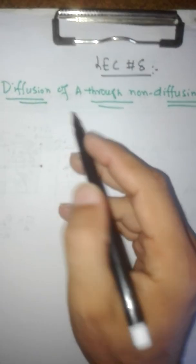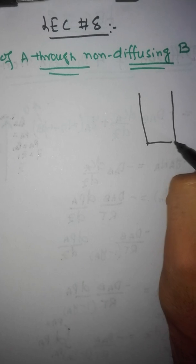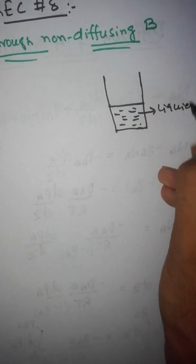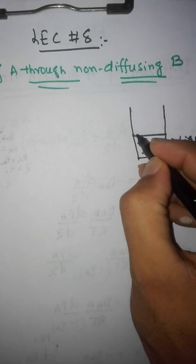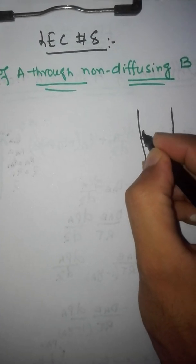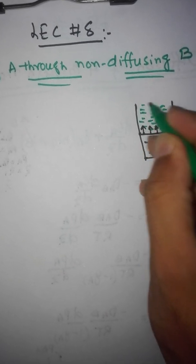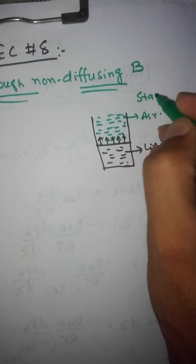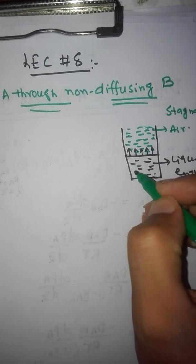In lecture 7 we already discussed diffusion of A through non-diffusing B. There was a beaker with some liquid ethanol. The ethanol was evaporating and diffusing through air. The air was stationary or stagnant — the air was not moving and was not diffusing into the ethanol.